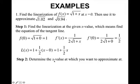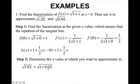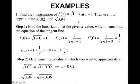Step 2: determine the x value at which you want to approximate. So if we're looking at the square root of 1.02, and we rewrite this so it is in the form of my function — square root of 1 plus x — that means the x value I have to put in is 0.02. Notice how this x value is fairly close to my point of tangency x equals 0. And I'm going to do the same idea with the square root of 0.94, which means my x value would be negative 0.06 — also an x value fairly close to my point of tangency x equals 0.